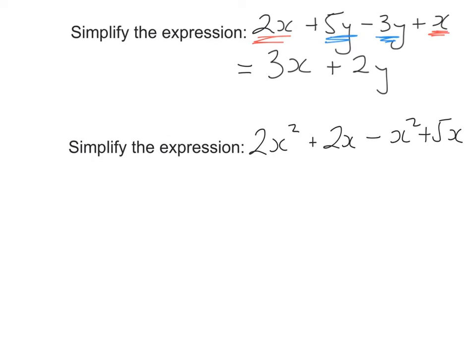The next question we need to be really careful about. A lot of the time students will add all those x's together. But remember, in this example we have an x squared and also just an x by itself. The way I sometimes think about it, it's like an espresso and a double espresso — they're different types of coffee, and you can't order 5 or 6 cups of coffee because it means different things.